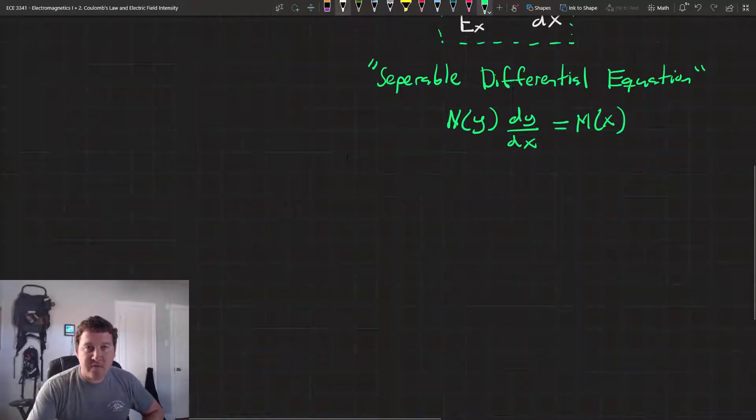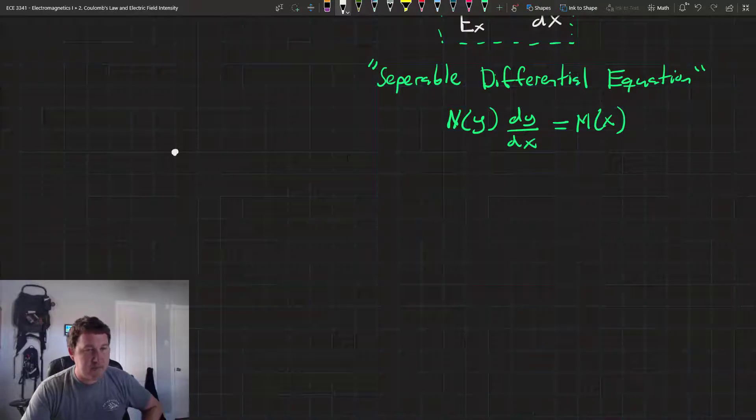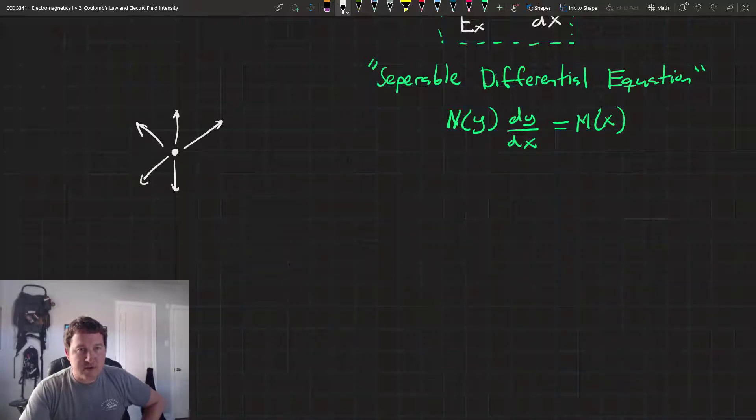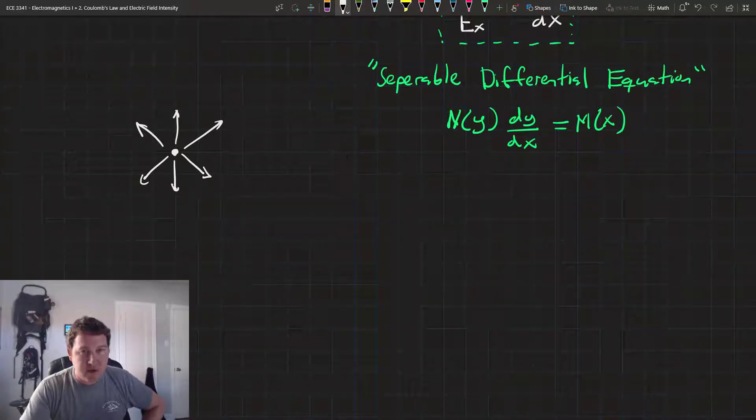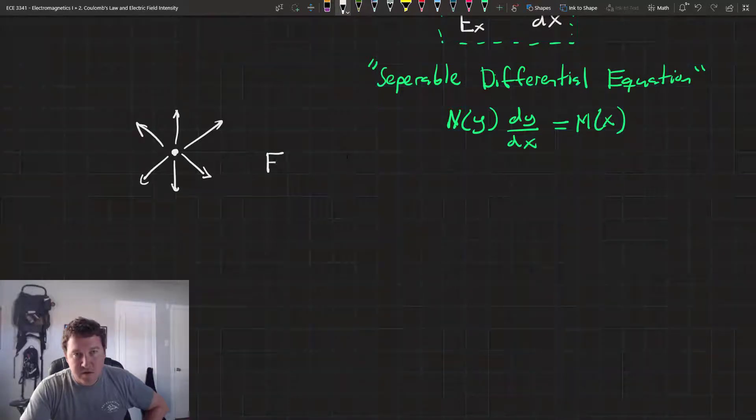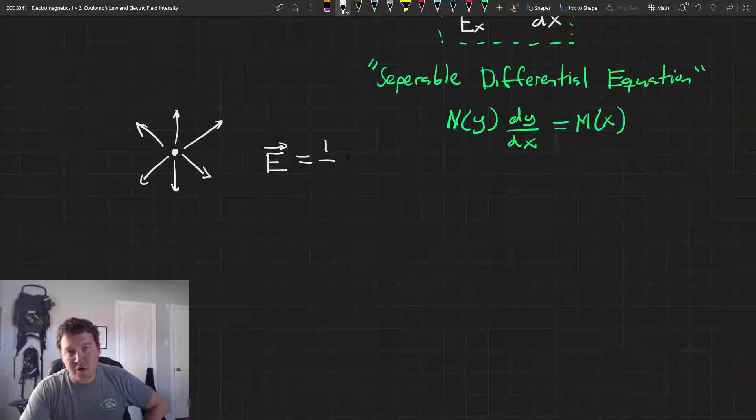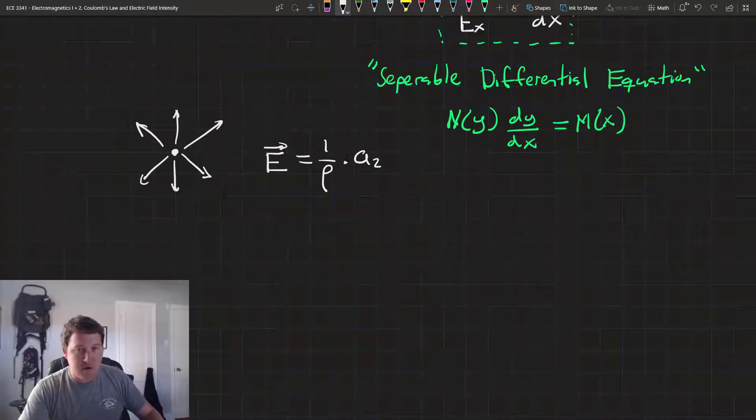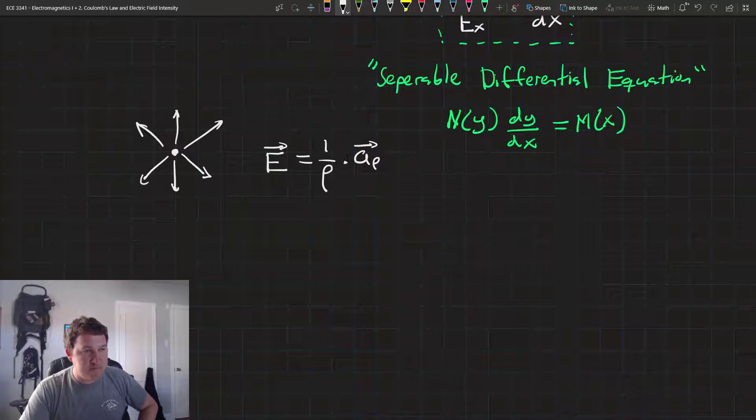Imagine that we have that line charge extending along the z-axis and it has its electric field lines extending across the x-y plane. And the field in cylindrical coordinates is given as e equals 1 over rho times the unit vector a sub rho.